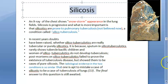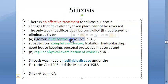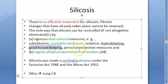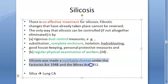There is no effective treatment for silicosis; the only option is prevention. Preventive measures include dust control, substitution, complete enclosure, isolation, hydroblasting, good housekeeping, personal protective equipment, pre-employment examination, and regular medical checkups. Silicosis is a notifiable disease under the Mines Act and the Factories Act.